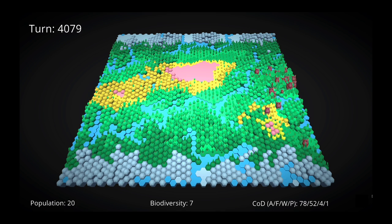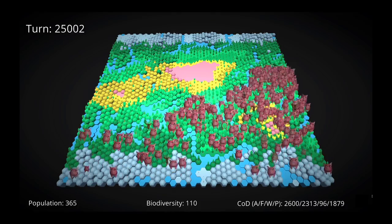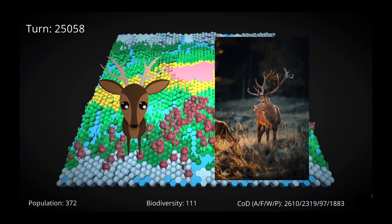As you can see, the areas where they frequent have significantly healthier vegetation, which is driven by the faster regrowth their waste enables. At around 25,000 turns, the map is still dominated by pigs, but we also have an increasing population of red deer, which are our first herbivores.